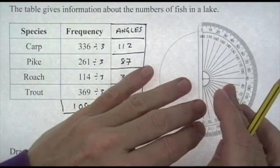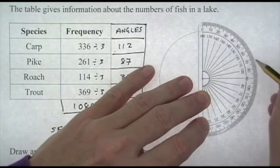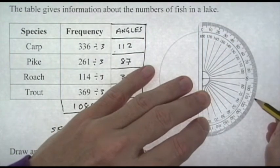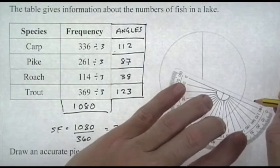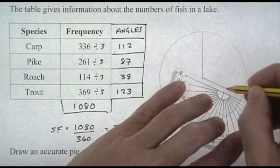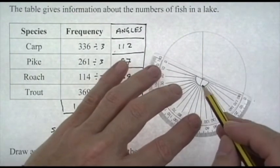We've got 112, so center of the protractor on the center of the circle, zero line straight up to the line you've drawn, measure around to 112, touch your pencil down. Don't move your pencil until the protractor is in place, then draw your line. That's the 112. Now we do the same: center of the protractor at center of the circle, zero line in place, and measure around for 87. Don't move your pencil and draw your line.